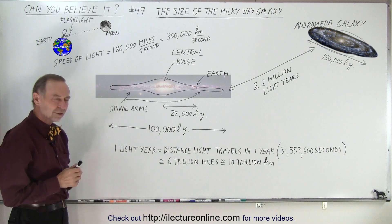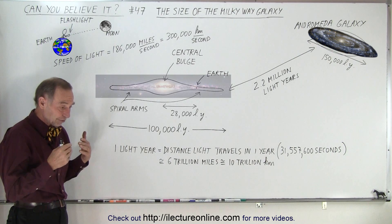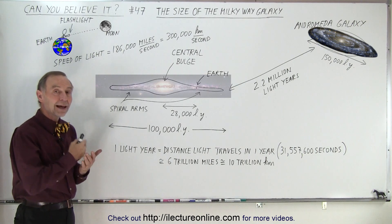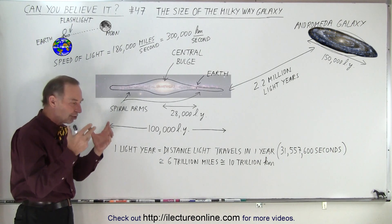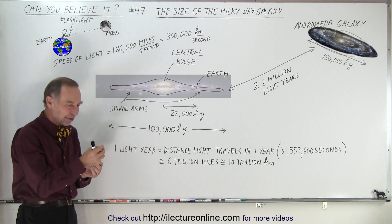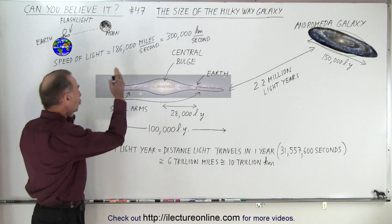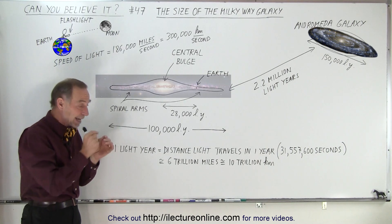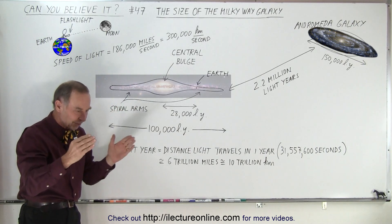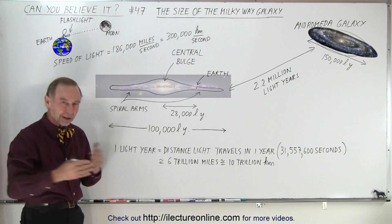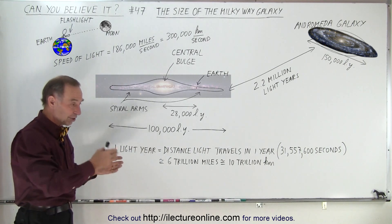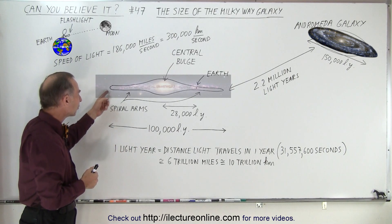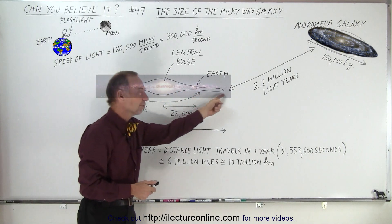Think about how long 100,000 years actually is. If we could live to be 100 years — very optimistic, some people do it — that would be 1,000 lifetimes. Imagine living for 100 years, and every second of your life, while you're awake and while you're asleep, the light is zipping along at 186,000 miles every single second — 86,400 seconds in a single day. You go to sleep, you wake up, an entire lifetime. And then the next person lives 100 years, and you do this for 1,000 hundred-year lifespans — that's the time needed for that light at this enormous speed to reach the other side of the galaxy.